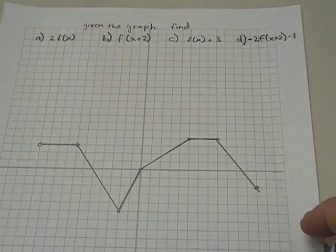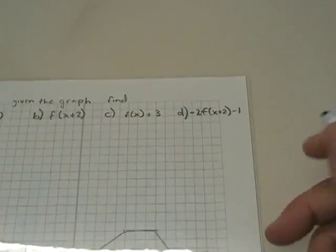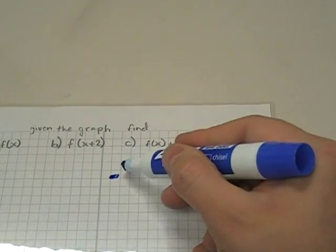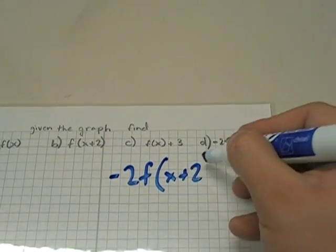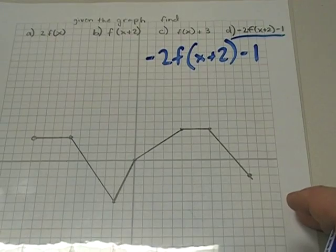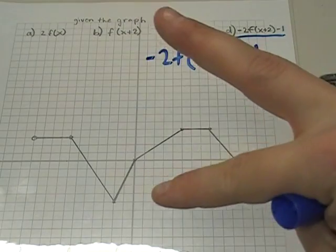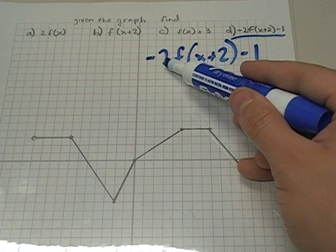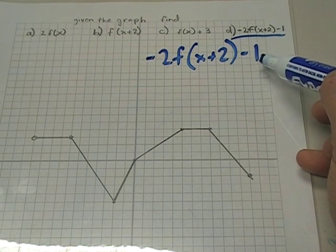The last one is the fun one — negative 2f(x+2) minus 1. The negative sign is going to invert this graph, flip it over the x-axis. The 2 is going to stretch it vertically so all the y values will be doubled. Then we will move it to the left two and move it down one.